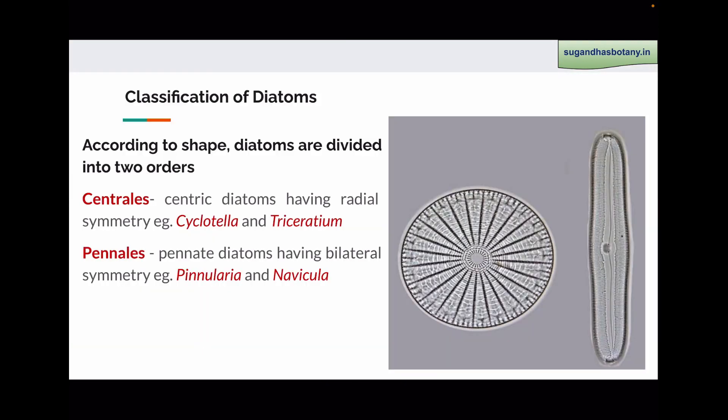According to shape, diatoms are divided into two orders: centrales and pennales. In the order centrales, centric diatoms are found which have radial symmetry. Examples of centric diatoms are Cyclotella and Triceratium. In pennales, pinnate diatoms are kept which have bilateral symmetry. Pinularia and Navicula are pinnate diatoms and they have bilateral symmetry.